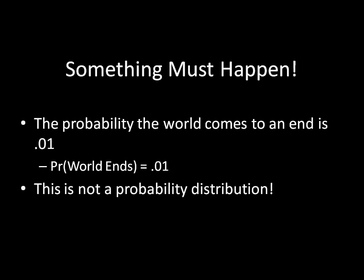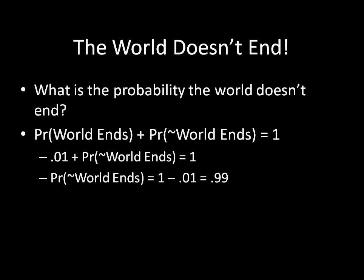So what else could happen? Well, the world could not come to an end. You might be wondering how we're going to calculate that, and it's actually very straightforward. You just have this equation from earlier that says that everything must add up to 1, and we have two events that could possibly happen. We have the world ends and the world doesn't end. So we plug in some numbers. We have .01 plus the probability the world doesn't end equals 1, and we can solve for our unknown the probability the world doesn't end, and we get .99.